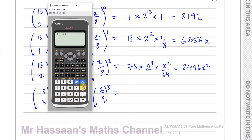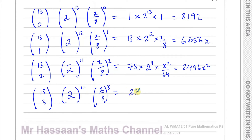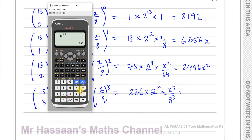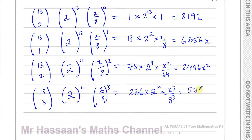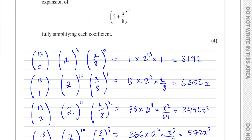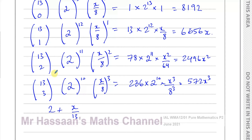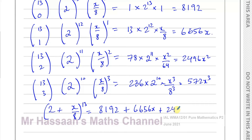Finally, 13C3 gives us 286. You have 286 times 2 to the power of 10, times x³ over 8³. Putting that in the calculator: 286 times 2 to the power of 10, divided by 8³, gives us 572x³. So the expansion of (2 + x/8)^13 equals 8192 + 6656x + 2496x² + 572x³, up to the x³ term. That's part A completed.